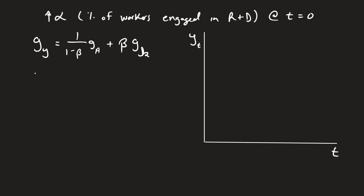When we're in the steady state, the growth rate of Y is going to be equal to just 1 over 1 minus beta times the growth rate of A. Because in the steady state, this is going to be equal to zero.